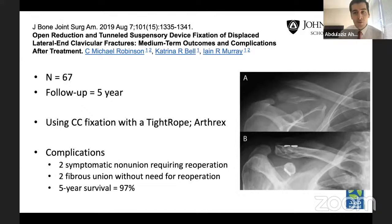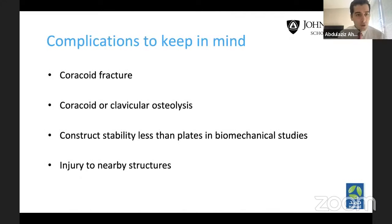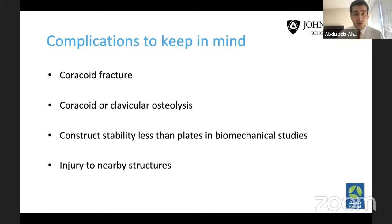In terms of complications to keep in mind — we haven't encountered these, but they have been reported. Be careful during coracoid dissection to avoid injury to nearby structures. Coracoid fracture is a potential problem, which is why we use a small drill bit. Coracoid or clavicular osteolysis can occur, especially with micromotion of the sutures. Additionally, the biomechanical stability of a suture-only construct has been shown to be inferior to plate fixation in biomechanical studies.